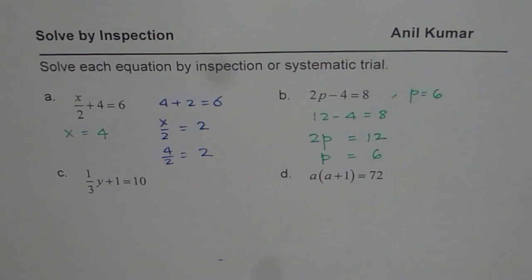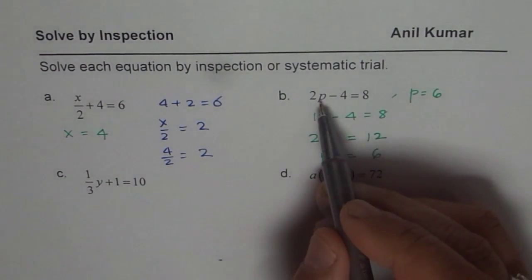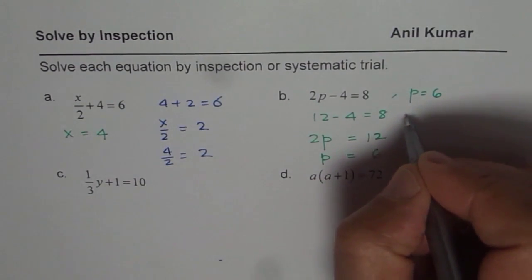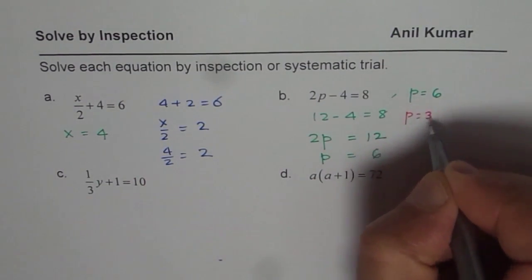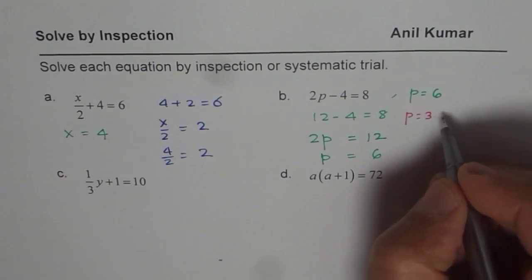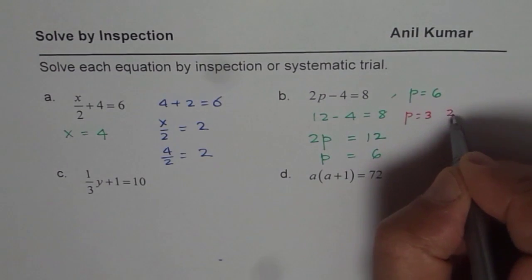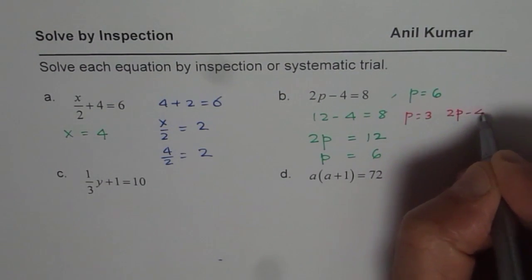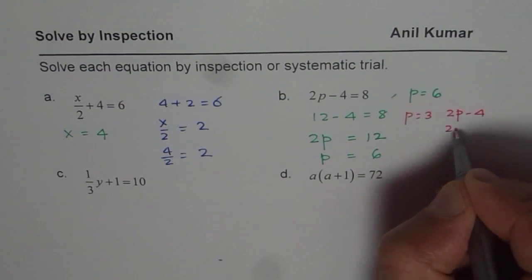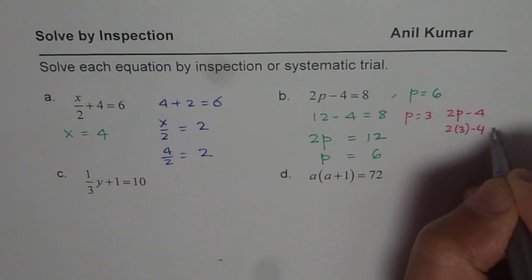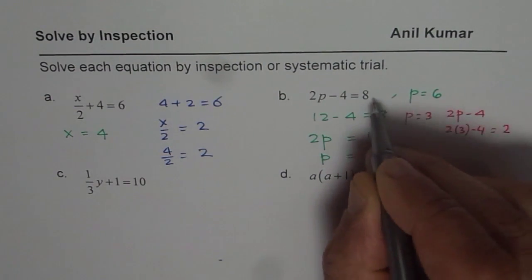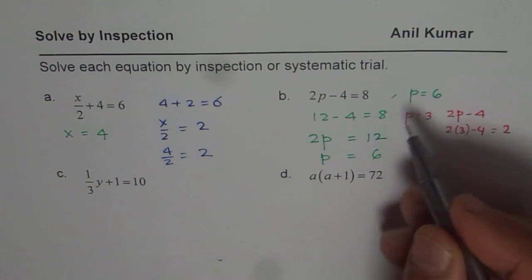The other method which we will be talking about is systematic trial. And that is, we can assume a value of p. So we say, let p be equals to 3. Now if I say 3 is the value of p, in that case, 2p minus 4 is how much? So we will calculate 2p minus 4 for 3. So we say 2 times 3 minus 4, 6 minus 4 is 2. Well, not 8.